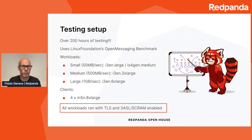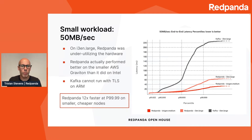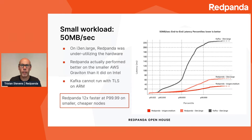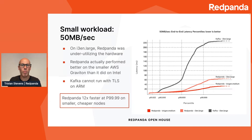Starting with the small workload — 50 megabytes per second — this was perhaps the one that required the most thought on our part. On the i3en.large instances, Redpanda was actually quite drastically underutilizing the hardware. You've probably heard about Redpanda's shared-nothing model, and we found we were really struggling to get the benefits of that model at this workload size. It was only when we tried the AWS Graviton instances — ARM-based instances with fewer cores and slightly less memory — that Redpanda was able to stress the box much better and ran much faster on the smaller instance than on the larger Intel machine.